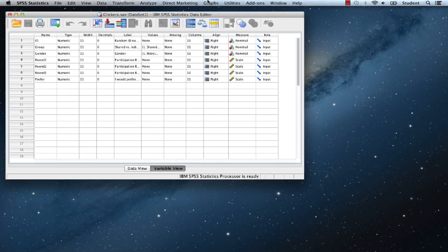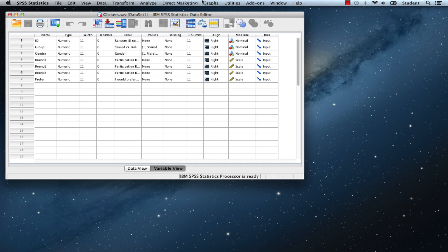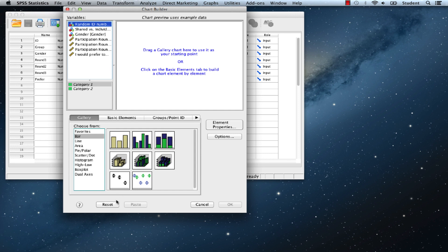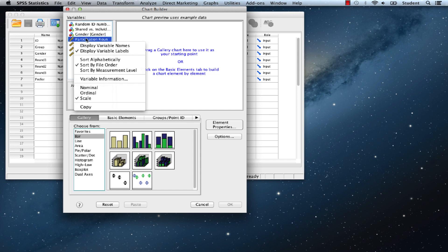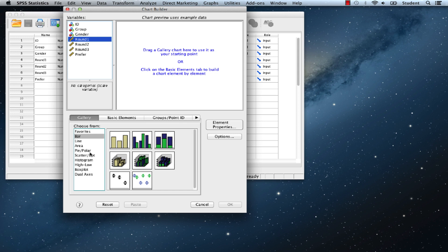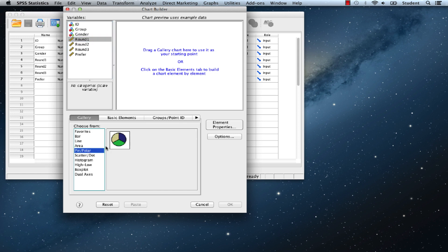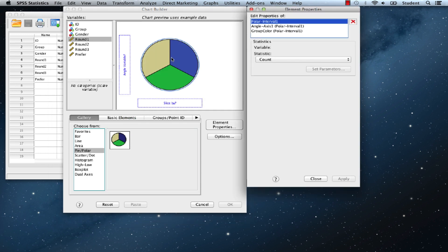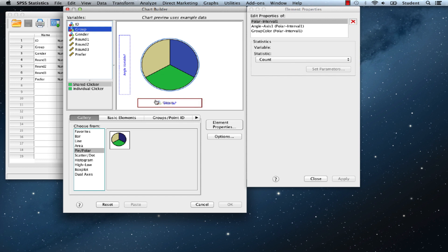To create a pie chart in SPSS using the clickers.sav dataset, go to graphs and chart builder. You can click the reset button if there's still something in the chart builder. I'm going to use the control click or right click to show display variable names. Now in the gallery, choose pie polar and we see there's really only one option. It's the pie chart. Drag pie chart up into the canvas and we're going to use group and drag that to the slice by drop zone. Now click OK.